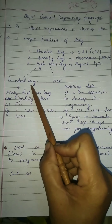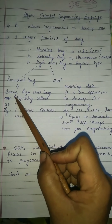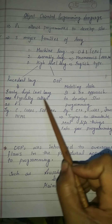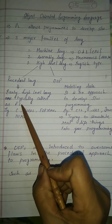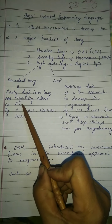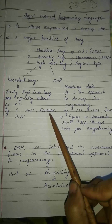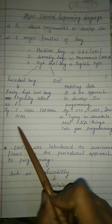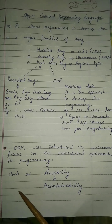In procedural language, the earlier high-level languages are typically called procedural languages. For example, C, COBOL, FORTRAN, and HTML are examples of procedural language.